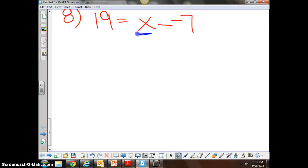So the problem is 19 equals x minus negative 7. The first thing I'm recognizing is that I have two signs that are next to one another. I do not like having two signs next to one another, so I need to fix that. How would I fix that, Pranav? A negative and a negative are a positive.